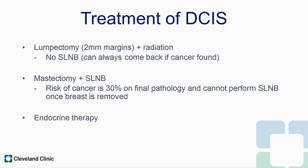The other option for DCIS treatment is a mastectomy. No matter how big or small the DCIS, even though it's stage zero, a woman always has an option for how they choose to get rid of their breast cancer. With a mastectomy, you are removing the breast, and you're essentially removing the drainage pattern of the breast. So on final pathology, if invasive cancer is found, you can't really go back and do a sentinel lymph node biopsy. Therefore, a sentinel lymph node biopsy is indicated for a mastectomy for DCIS. The overall risk of upgrading to an invasive cancer for DCIS is about 30%.